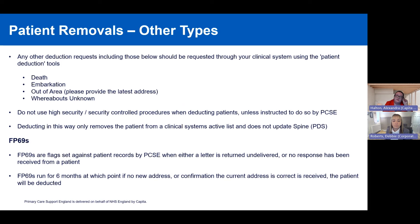Other types of removals — including death, embarkation, out of area (please provide the latest address in your GP messages for out-of-area deductions), and whereabouts unknown — should be requested through your clinical system using the patient deduction tools. Please do not use high security or security-controlled procedures when deducting patients unless PCSE tells you to do so, as this only removes the patient from the clinical system's active list and does not update the Spine or PDS. FP69 flags are set against patient records when a letter is returned undelivered or no response is received — these run for six months, after which the patient is deducted if no new address or confirmation is received. Removals at patient request should be in writing and are actioned as 14-day removals.